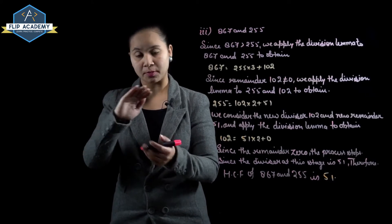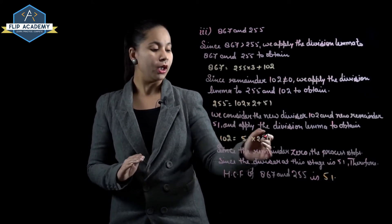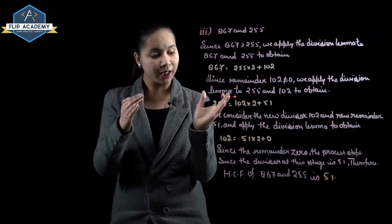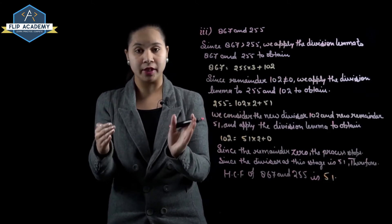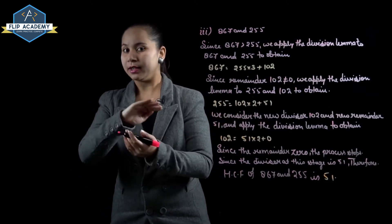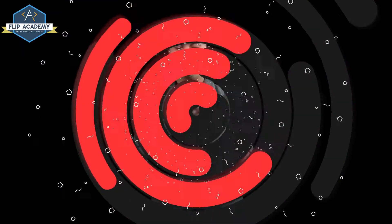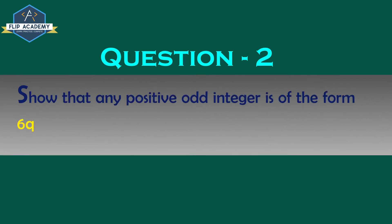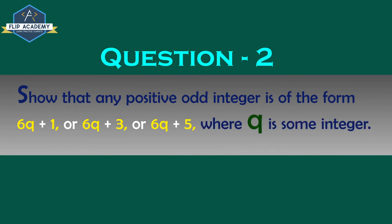The divisor at this stage is 51, so the highest common factor is 51. Third part is complete. Now Exercise 1.1, Question 2: Show that any positive odd integer is of the form 6q + 1, or 6q + 3, or 6q + 5, where q is some integer.